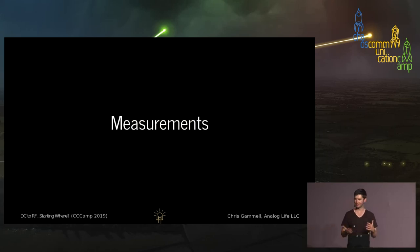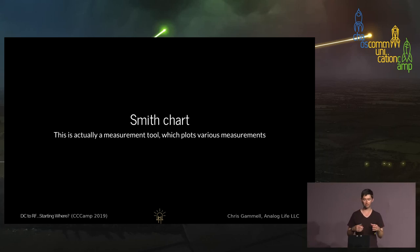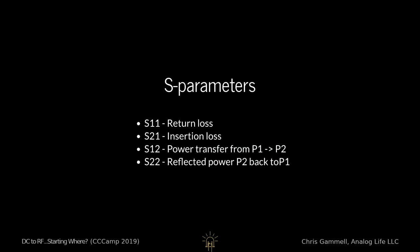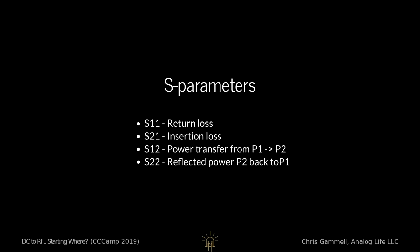Let's talk about some measurements. Smith charts are basically a collection of measurements in a visualization tool — they show things like impedance and reactance. I'm not using Smith charts all that much, but VNAs allow you to have these outputs so you can match things a bit easier. The inductors and capacitors with different values from that pi network — you can find those by using something like a Smith chart. VNAs also show S parameters: return loss, insertion loss, power transfer, and reflected power — all things you can use to characterize your systems.